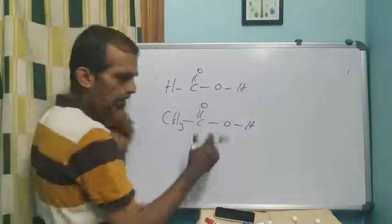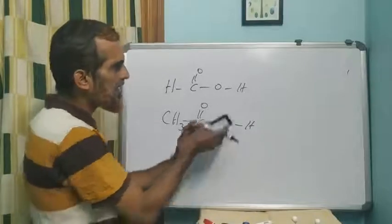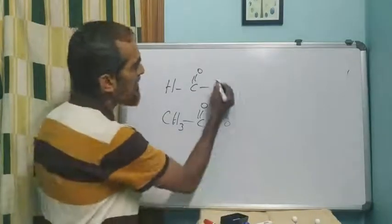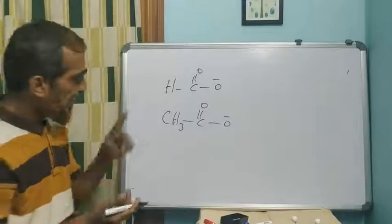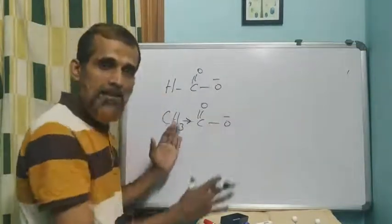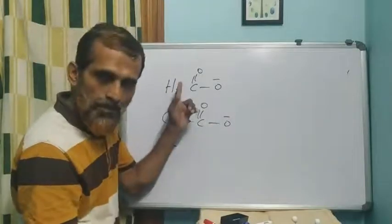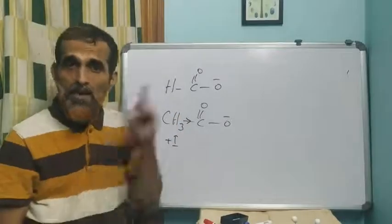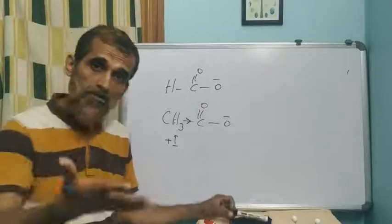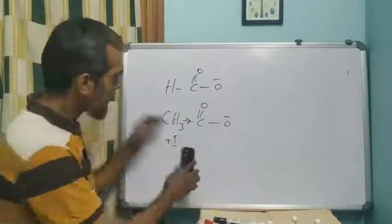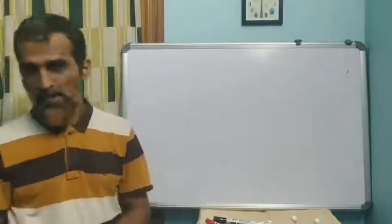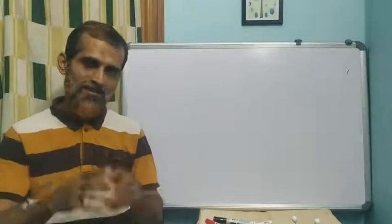The final question compares formic acid (HCOOH) and acetic acid (CH3COOH). Write the ionization equation, take the conjugate base, and assess its stability. In acetic acid, the methyl group's plus I effect pumps electrons, increasing the negative charge on the carboxylate and destabilizing it. Formic acid has no such effect, so its conjugate base is comparatively more stable and formic acid is more acidic. That's all for this session; we'll discuss the remaining electron displacement effects in the coming classes.